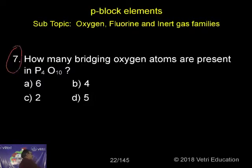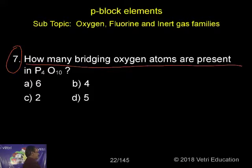Question number 7. How many bridging oxygen atoms are present in P4O10? It is a dimer of phosphorus pentoxide, P4O10. So here the answer may be 6.